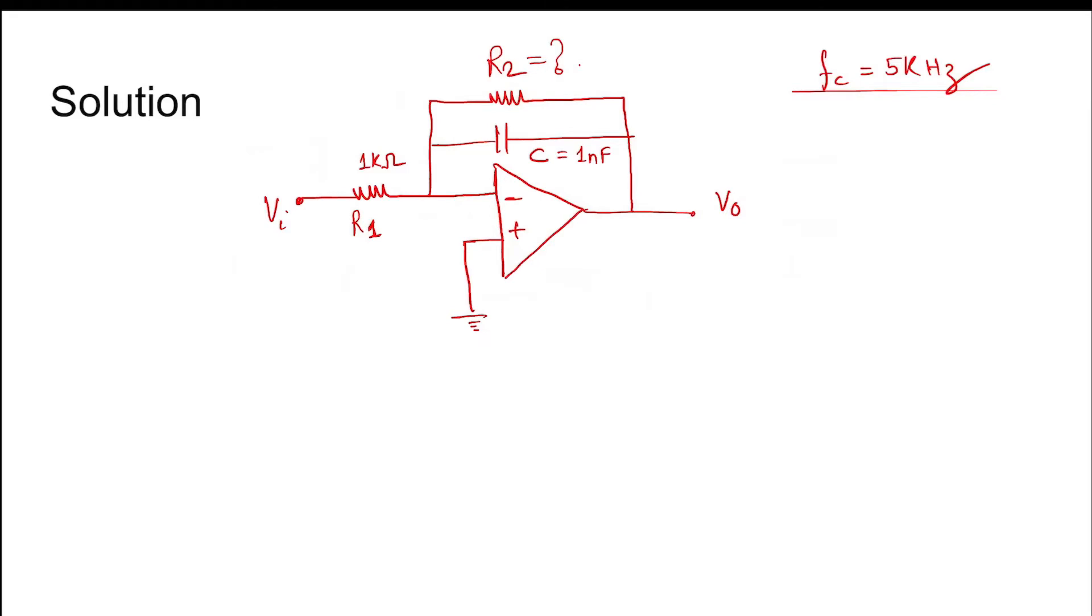Moving to the solution, this is the given structure of the op-amp. Now let us find the gain: Av = V0/Vi. If this is Z2 and this is Z1, for an ideal op-amp we can write, due to virtual ground, this is zero.